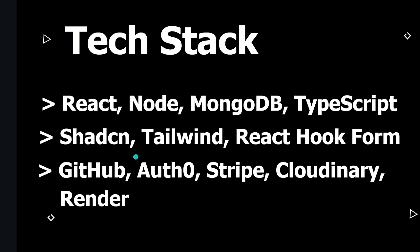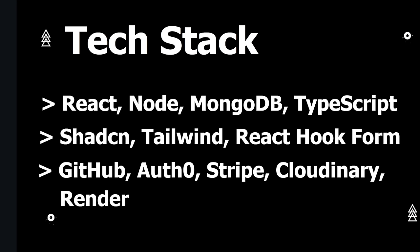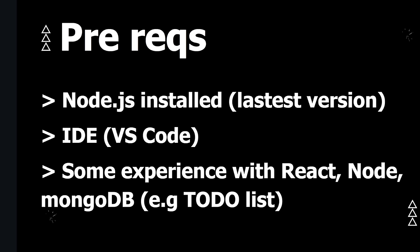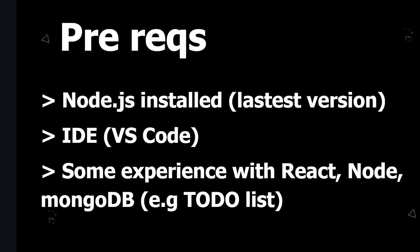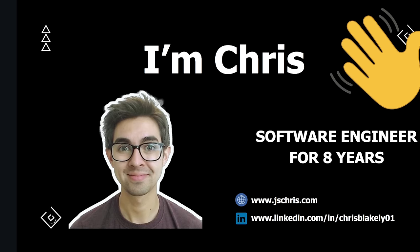We will be styling our app using Shadcn and Tailwind along with React Hook Form, and then we're going to integrate with some enterprise level third-party services such as GitHub, Auth0, Stripe, Cloudinary, and then we will deploy everything to render.com. All you need is Node.js installed and an IDE. It's helpful to have some experience with full stack apps, but I explain the what, hows and whys behind everything. My name is Chris and I've been a software engineer for over eight years. I'm super excited to go on this adventure with you.